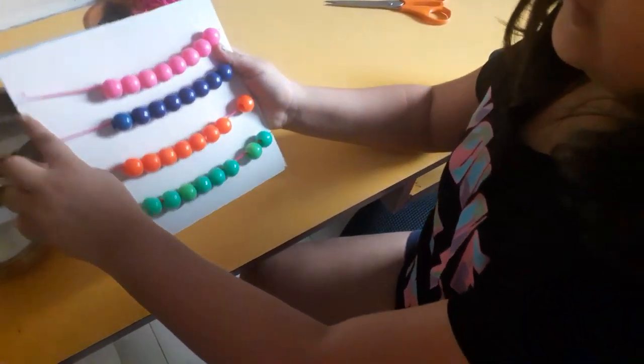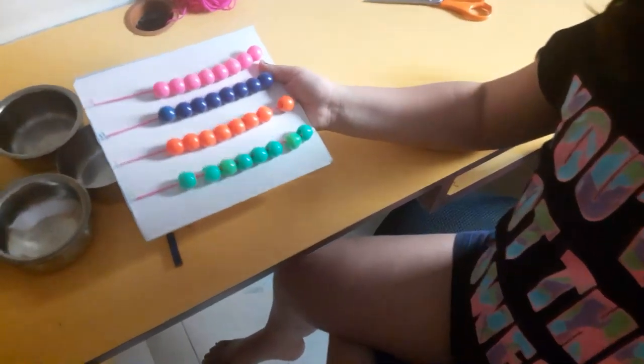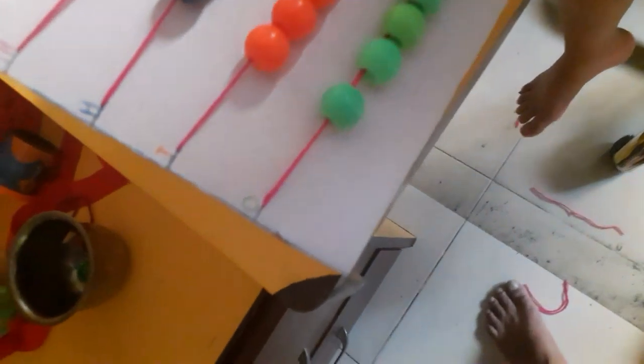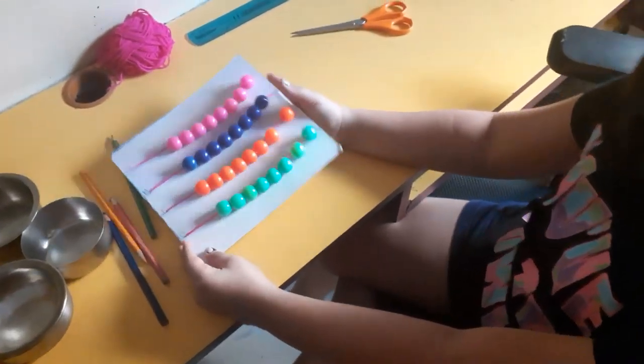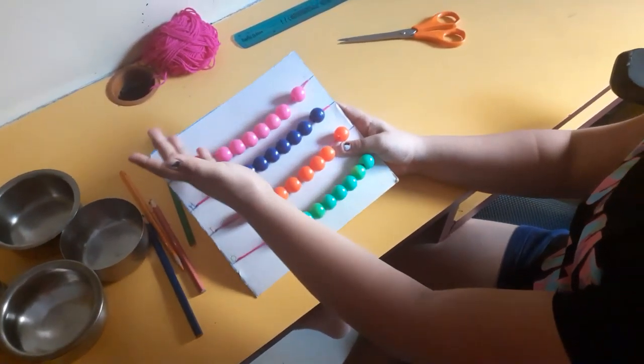That's why I have written here thousands, hundreds, tens, and ones. That's why I've written so I can properly make it - so I can know which one is which.